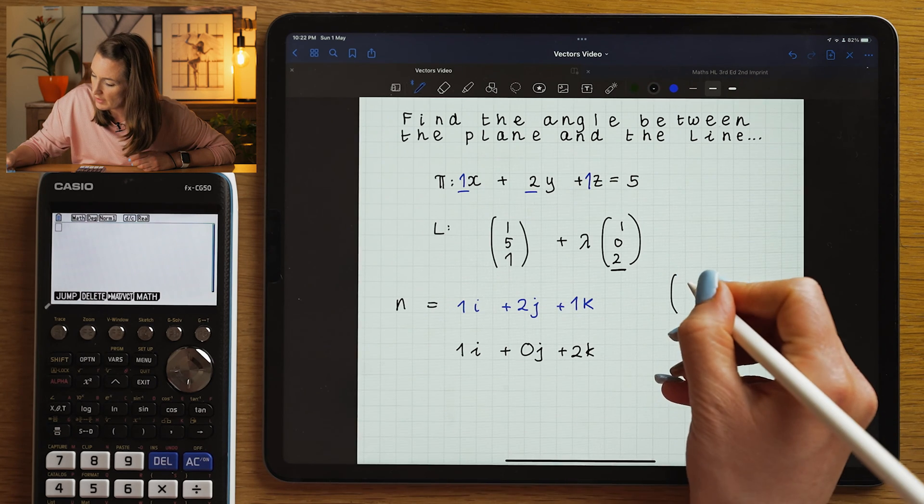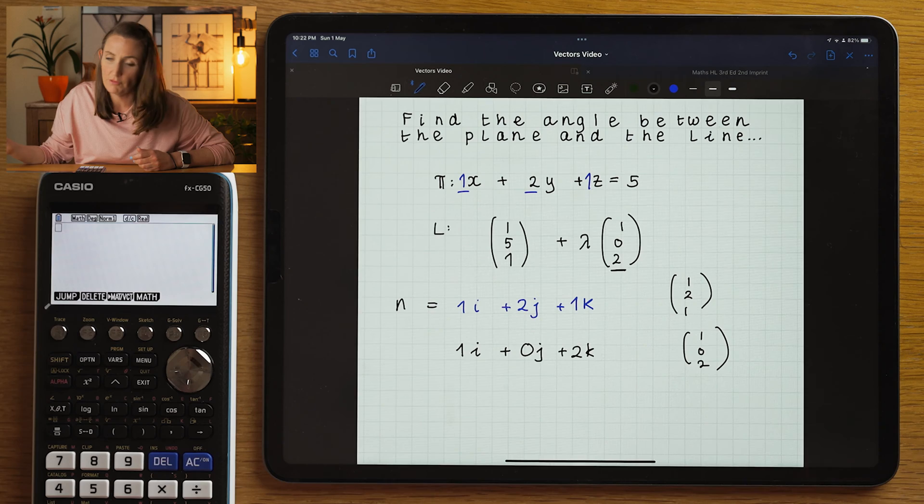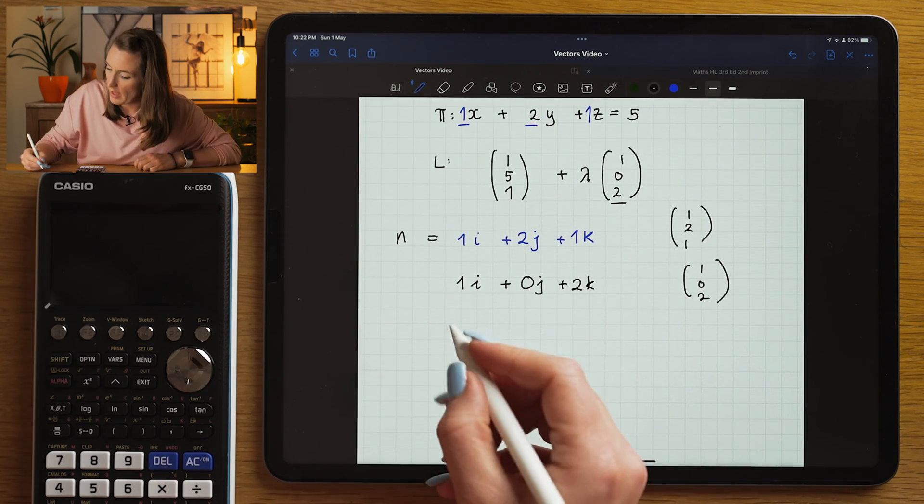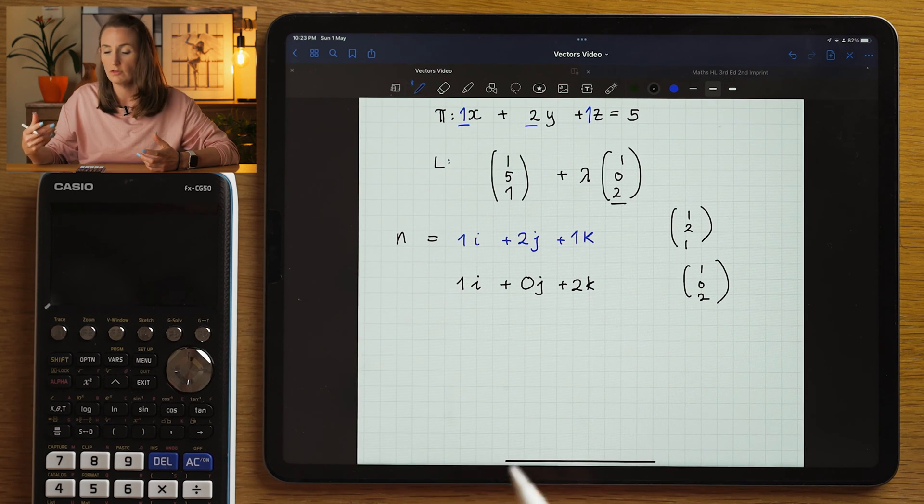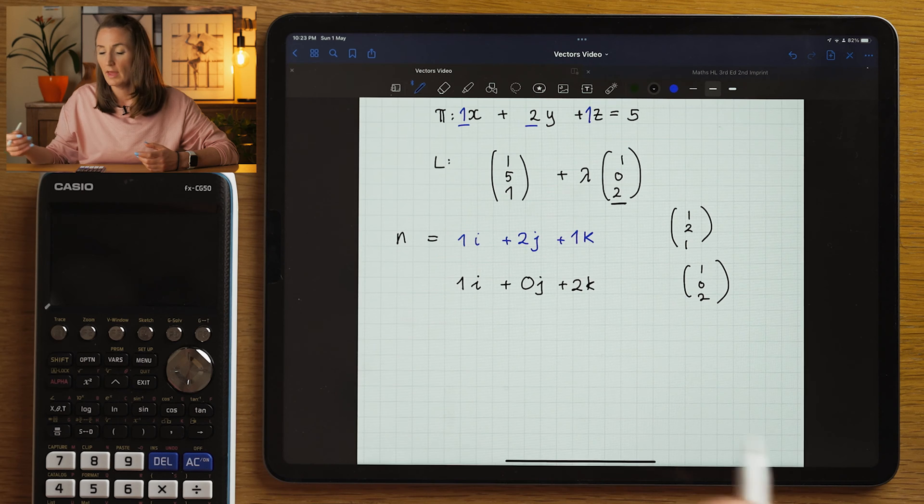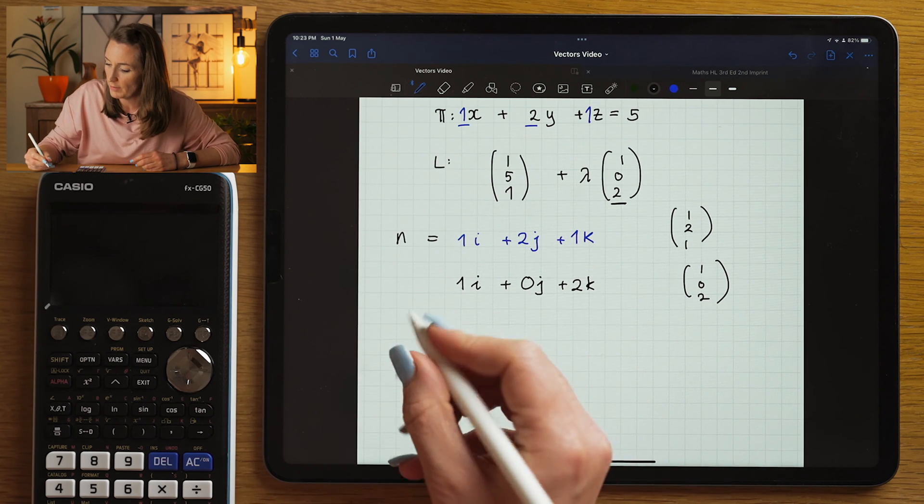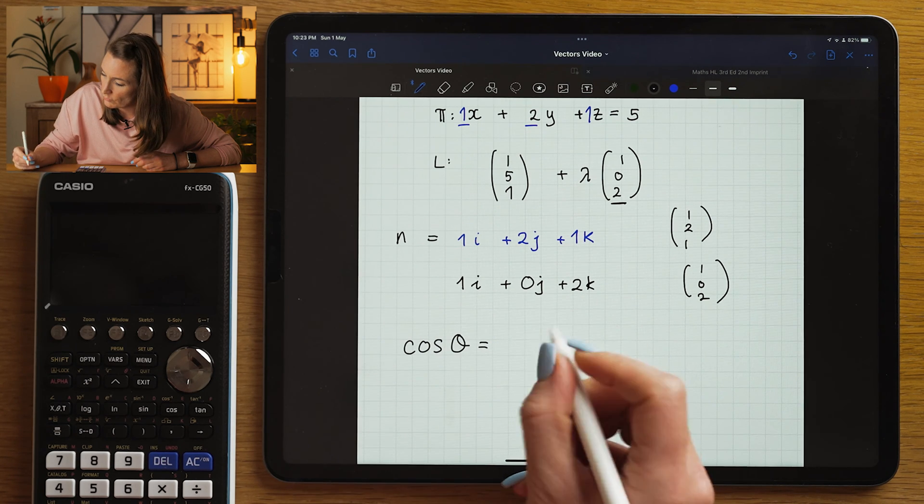You can also write these as 1, 2, 1, and 1, 0, 2. However you prefer to write the vectors. Now, I'm going to find the angles between the vectors using the dot product. You should be quite familiar with that by now. If you need a recap, go back and check out the other videos on this topic.